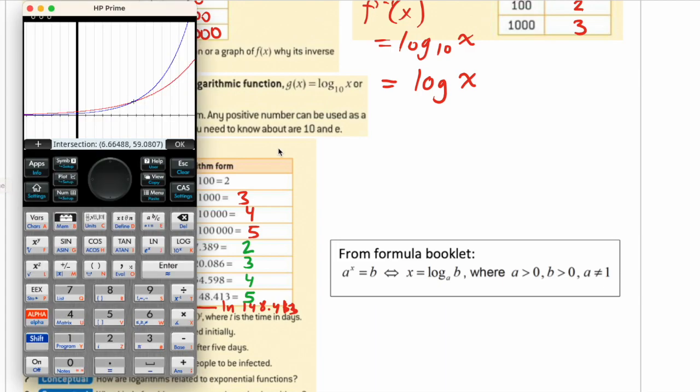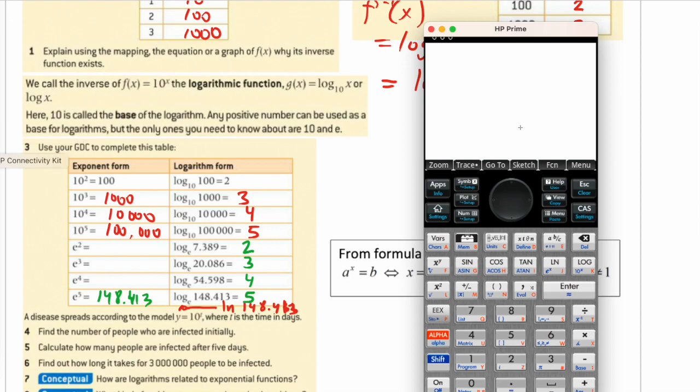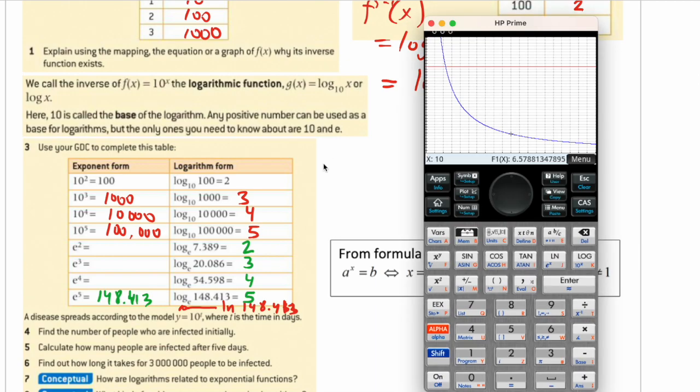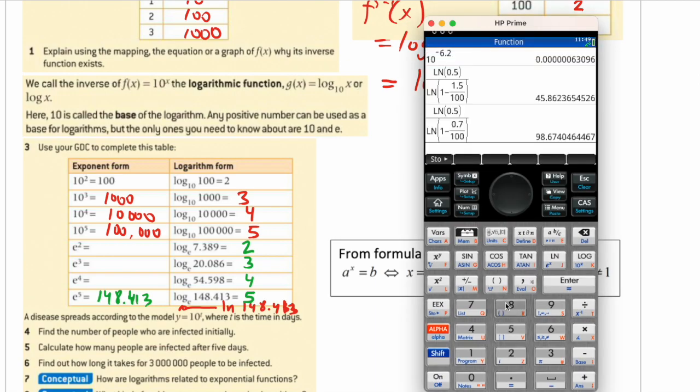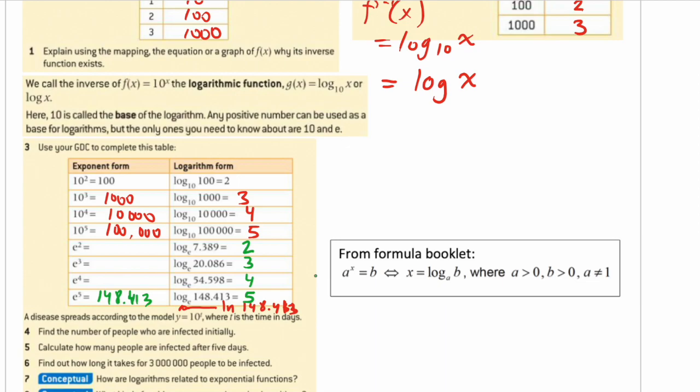On your calculator, I'll show you. You just do ln. ln stands for the natural log, but it just means base e. So ln, for instance, 148.413 equals... Let me just reboot it real quick. So ln 148.413 gives you approximately 5, right?